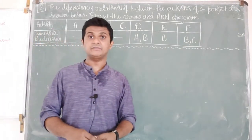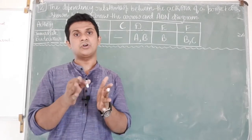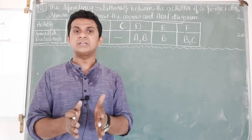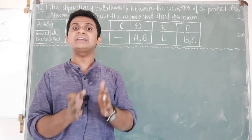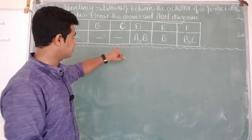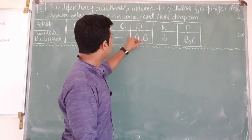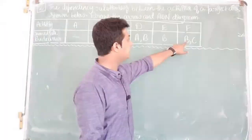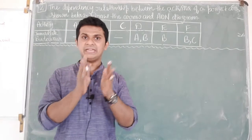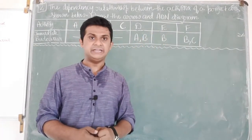The next consideration is the ending activity. Ending activities are those which do not act as a predecessor of any activity. Looking at the question, activities D, E, and F are not immediate predecessors of any activity, which means they are the ending activities. So A, B, and C are our starting activities, and D, E, and F are our ending activities.